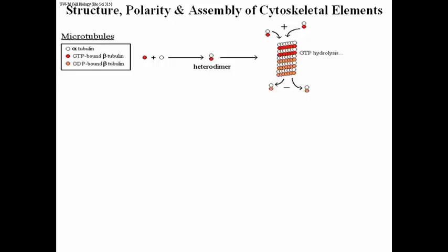That's the red circle, the red ball, if you will. So a heterodimer forms when an alpha and a GTP bound beta come together. And microtubules are formed by the aggregation of these heterodimers containing GTP, at least to start with.